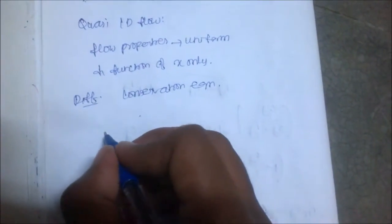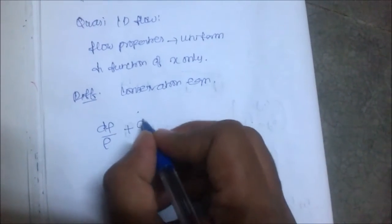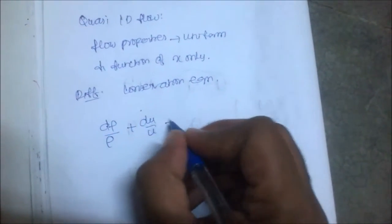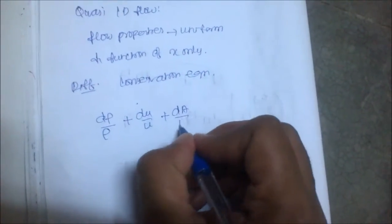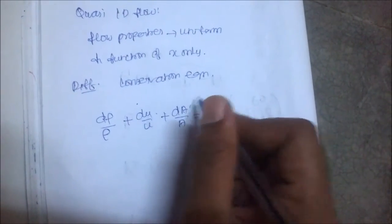The differential form is: d rho/rho + du/u + da/a = 0, where rho is density, u is velocity, and a is area.